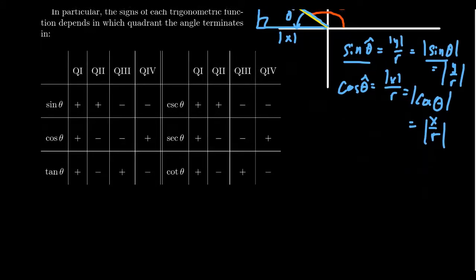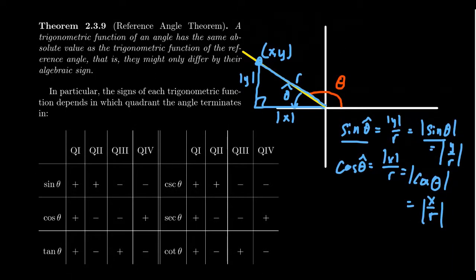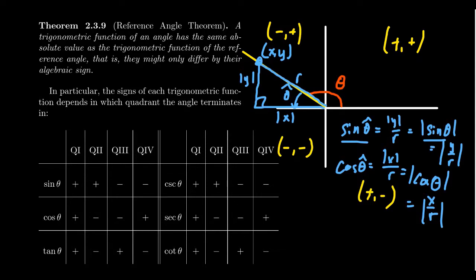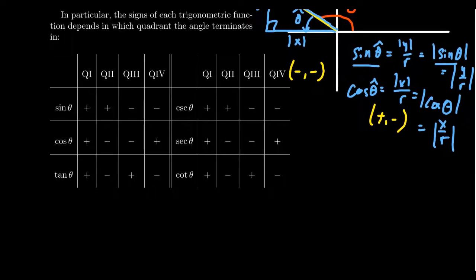R is always going to be positive because it's the distance between the origin and a point — always a positive number. The x-coordinate could be positive or negative, and the y-coordinate could be positive or negative. In the first quadrant, x is positive and y is positive. In the second quadrant, x is negative and y is positive. In the third quadrant, x and y are both negative. In the fourth quadrant, x is positive and y is negative. Since sine is y over r and r is always positive, the sign of sine will always match the sign of the y-coordinate. Likewise, the sign of cosine will always match the sign of the x-coordinate.